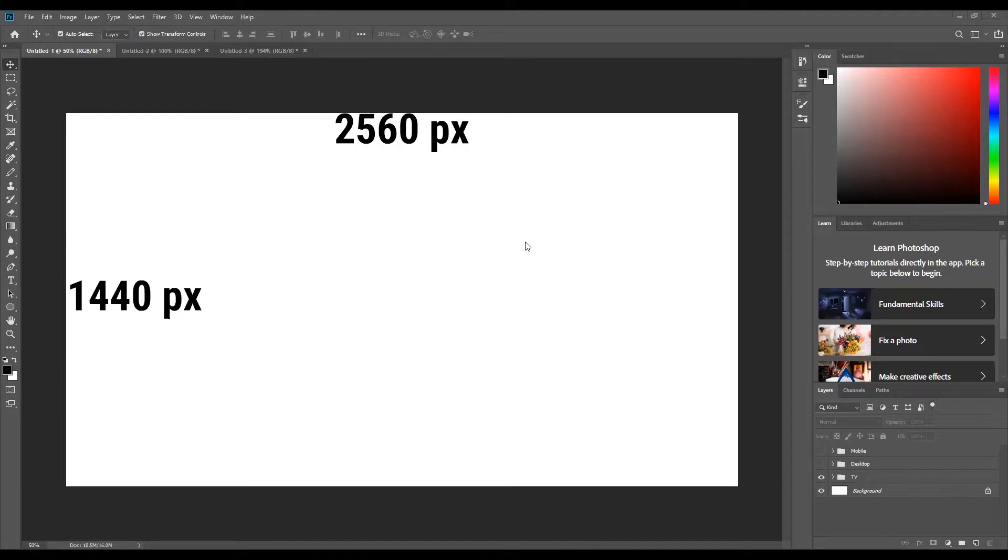In your template for your YouTube channel art, you're going to start with a file that's 2560 pixels wide by 1440 pixels tall. This is the aspect ratio that will show up on a TV. If somebody's watching your channel on their smart TV or a gaming console, this is what it'll look like.